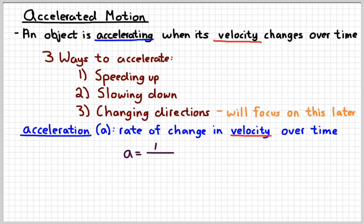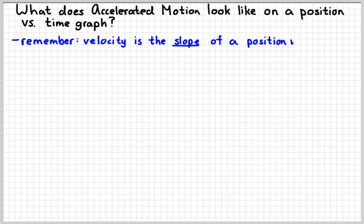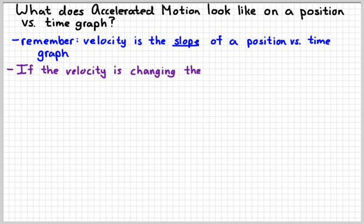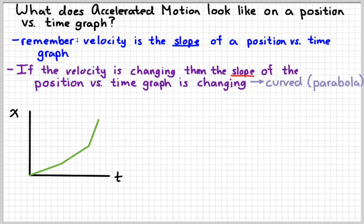The word acceleration simply means rate of change in velocity over time. We can symbolize it, and acceleration would have units that look like meters per second per second or meters per second squared. The question now is what does accelerated motion look like on a position versus time graph. Remember that the velocity can be found by the slope of a position time graph. If something is speeding up or slowing down, then that means the slope of the position time graph is going to be changing. If the slope of a graph is changing, then that means that the graph is going to be curved, namely it'll be a parabola.